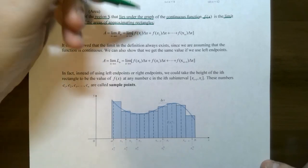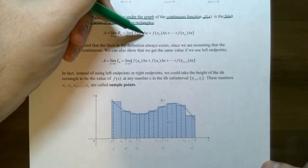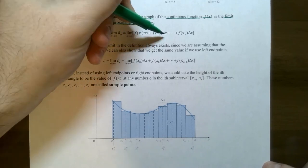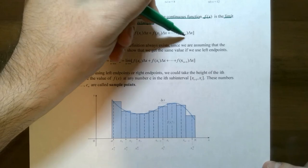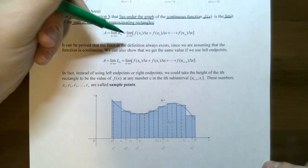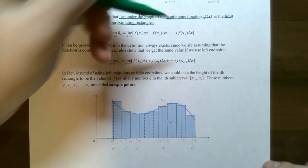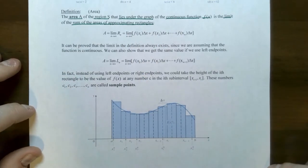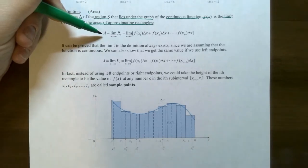If you use the right endpoints, it is f of x₁ times delta x, which was the width, plus f of x₂ times delta x, plus all the way to the last endpoint f of x sub n times delta x. And it's the limit as n approaches infinity — so we increase the number of rectangles for this approximation using right endpoints. It turns out that is the area under the curve.